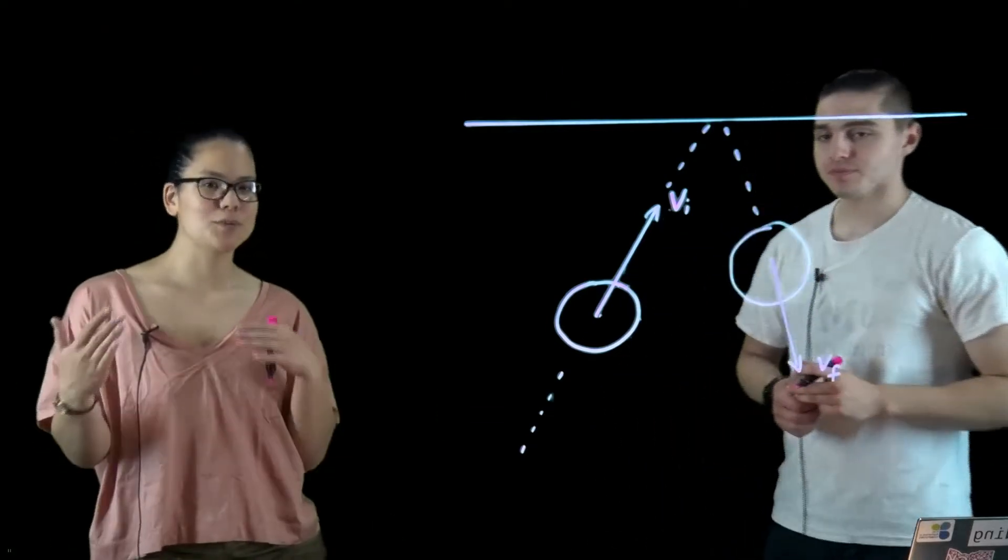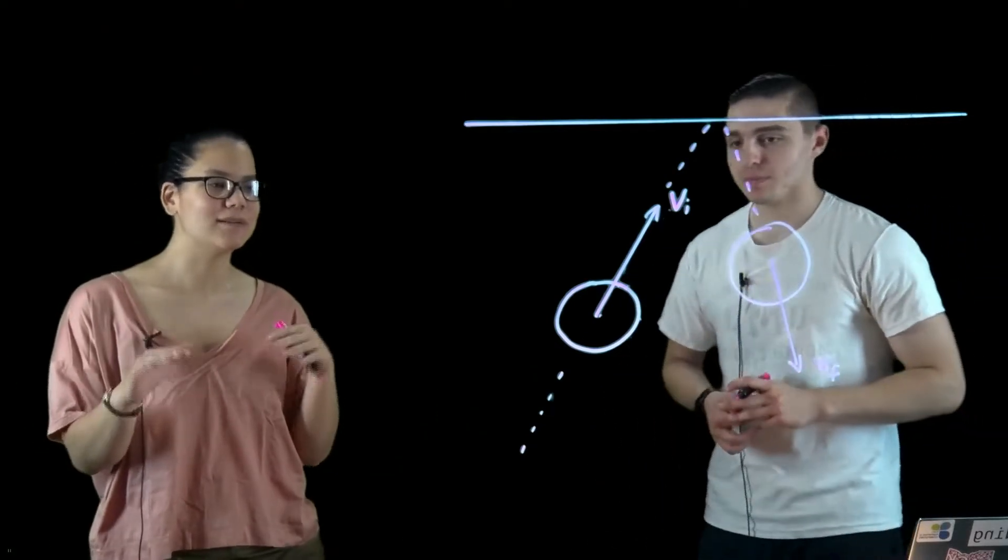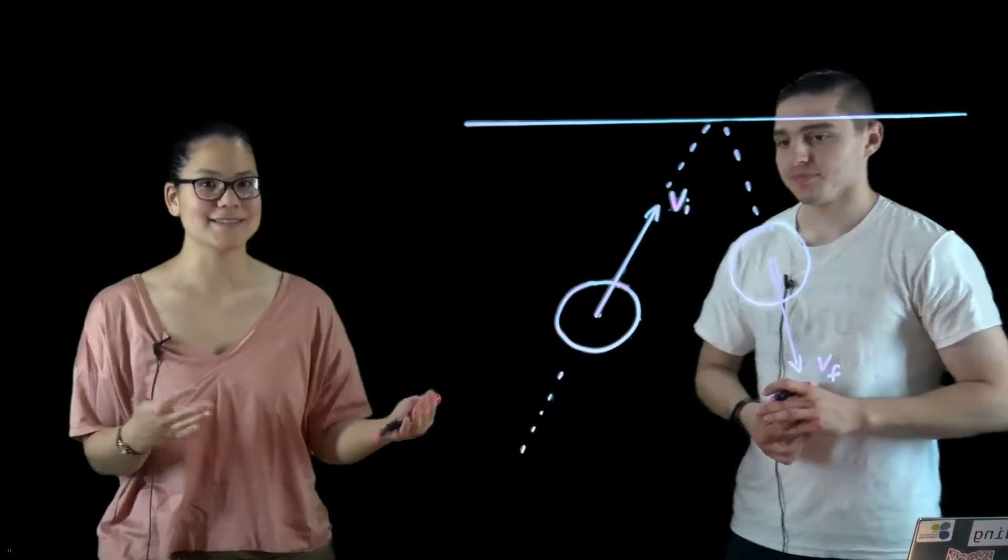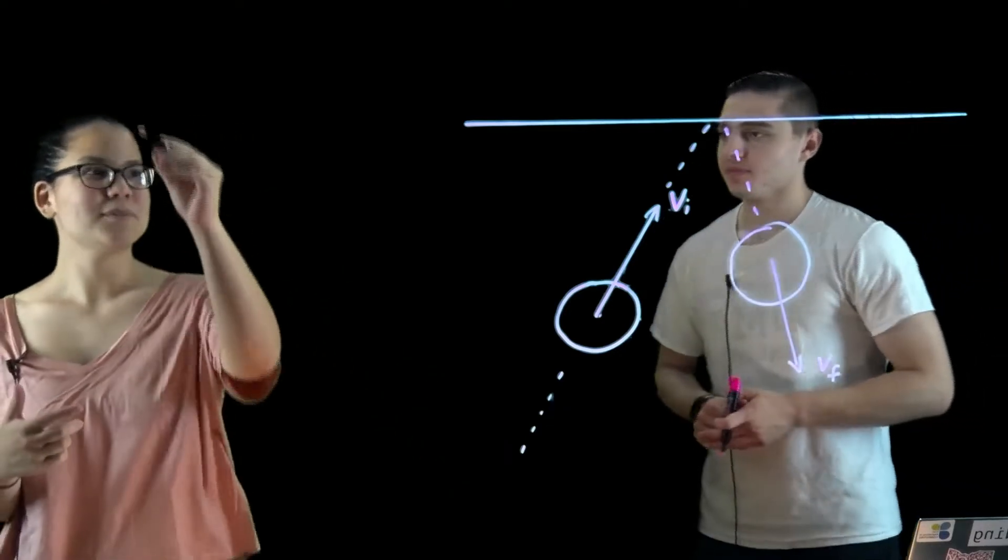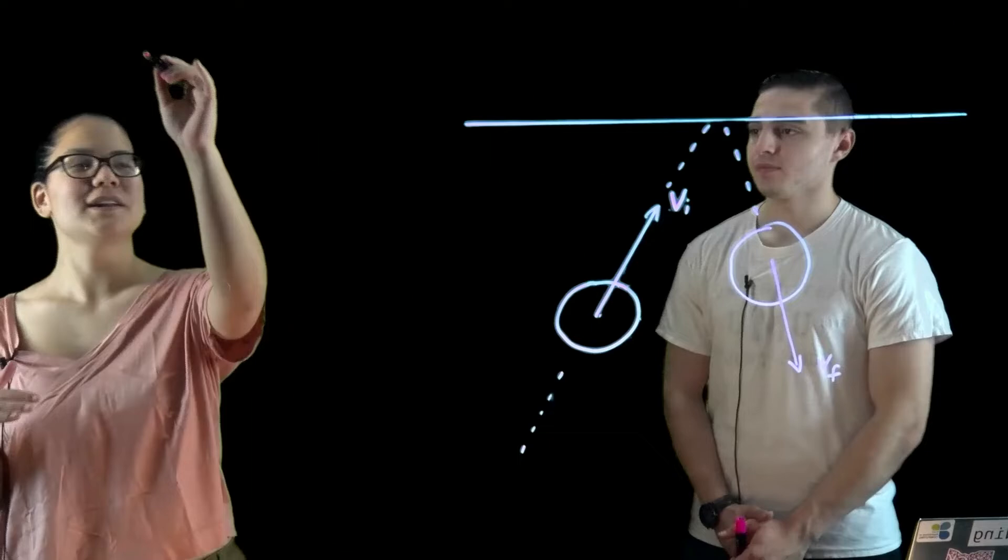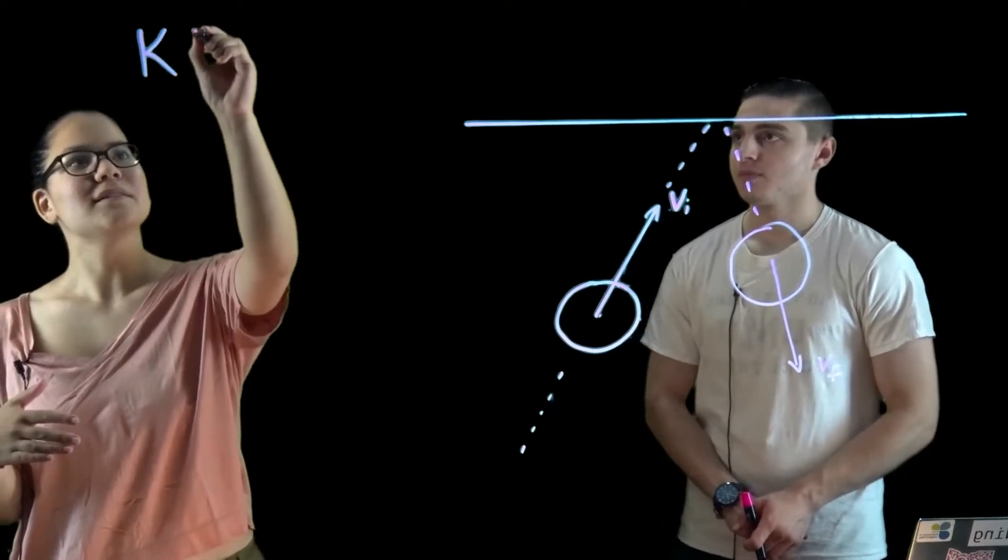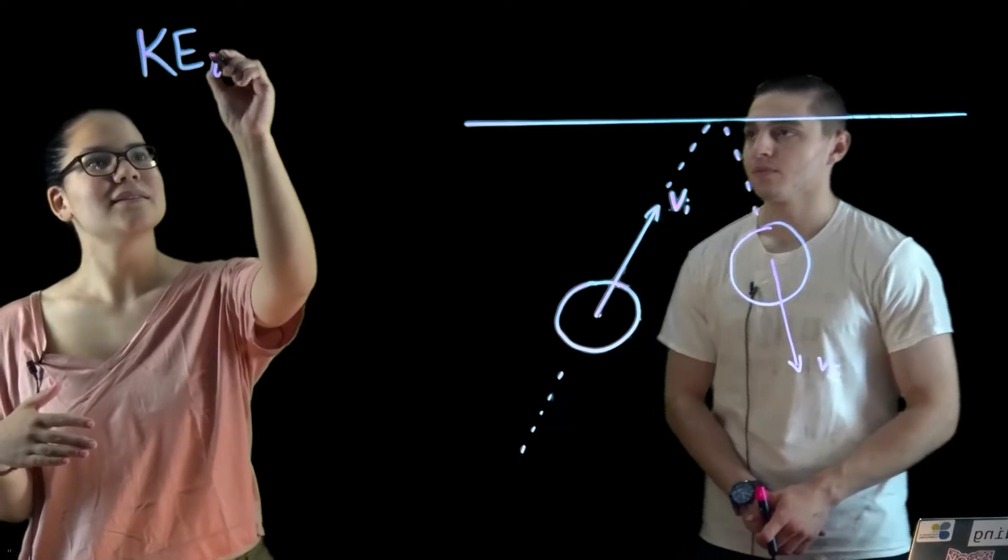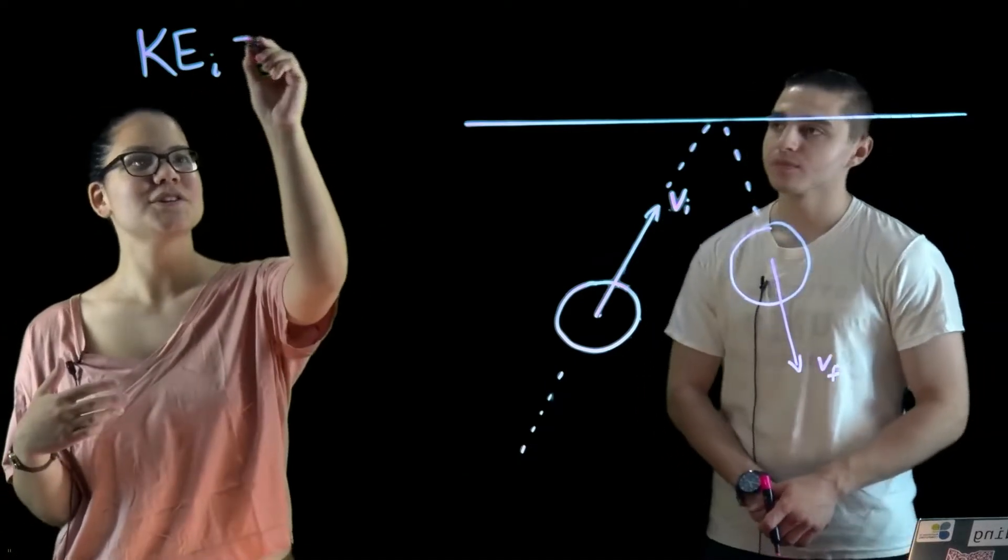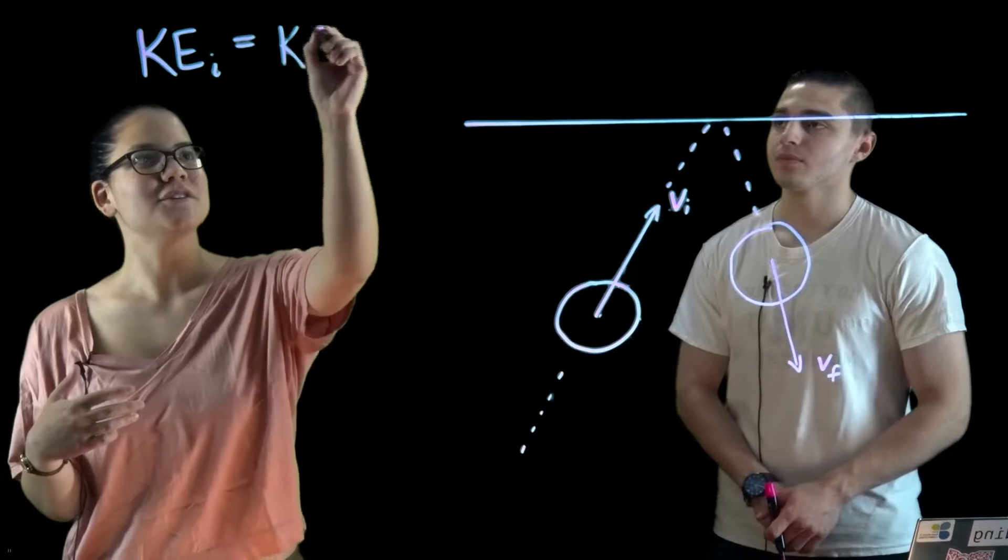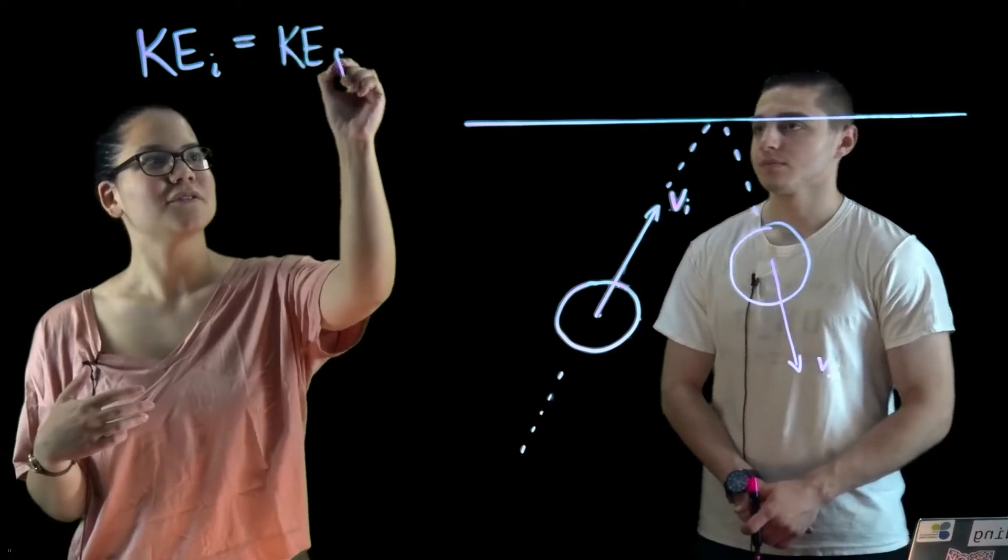And what we're going to assume about the collision between the blob and the ceiling is that it's elastic. And what that means is that we can write for the kinetic energy of the ball and the system that the kinetic energy before the collision is equal to the kinetic energy after the collision.